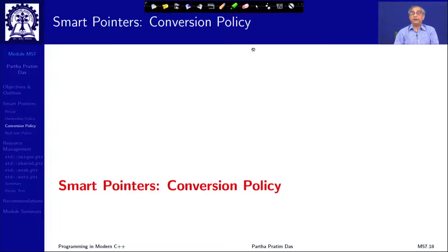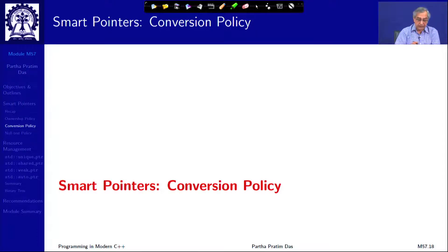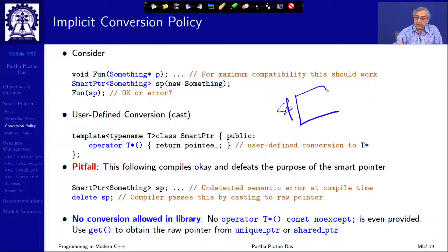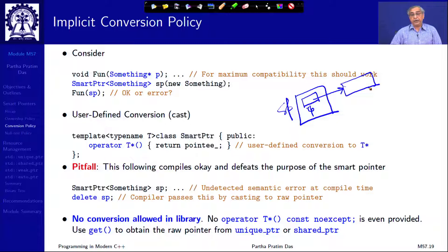The next policy is the conversion policy. If I have a smart pointer — which is a C++ object containing a raw pointer — can I convert it to its raw pointer? For example, if there is a function `fun` which takes a raw pointer to `something`, and I have a smart pointer `sp` to `something`, the question is: is the call `fun(sp)` allowed? As such it should not be allowed because they are of different types. This can be allowed provided the smart pointer can by default be converted to a raw pointer.